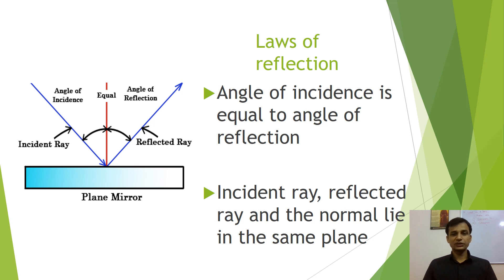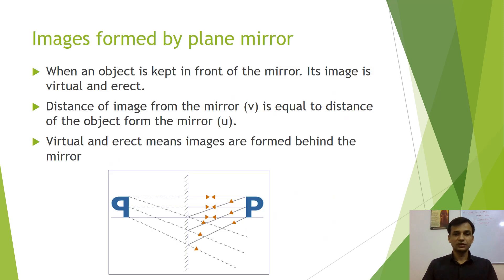According to the second law of reflection, the incident ray, reflected ray, and the normal all lie in the same plane.